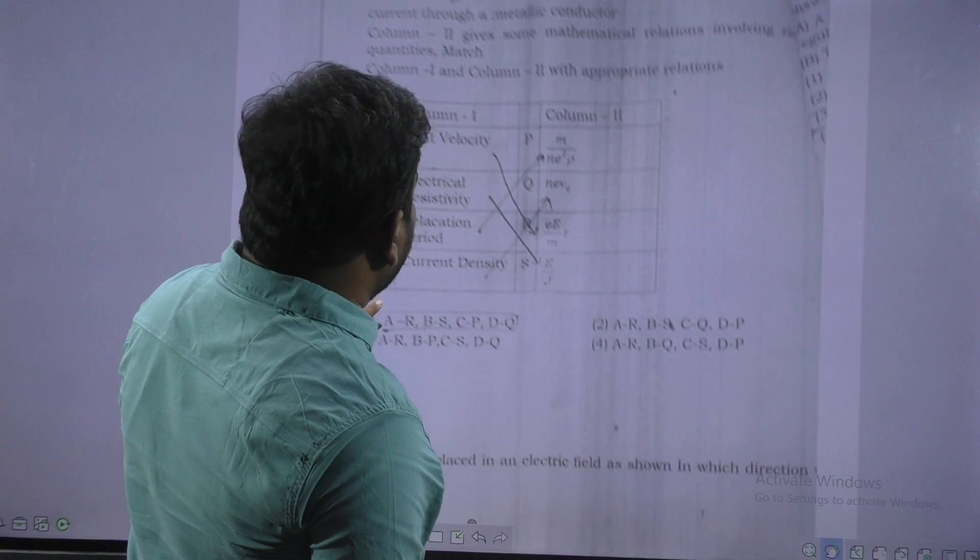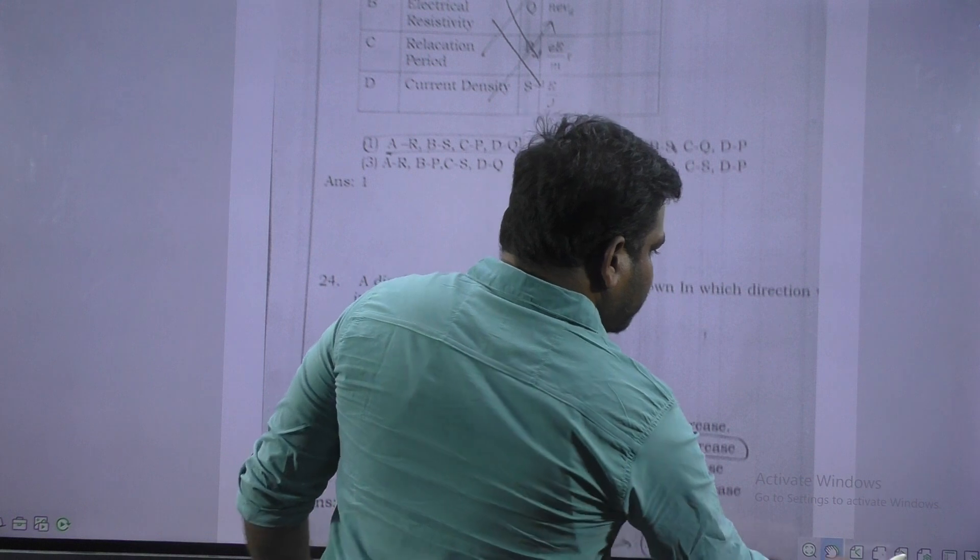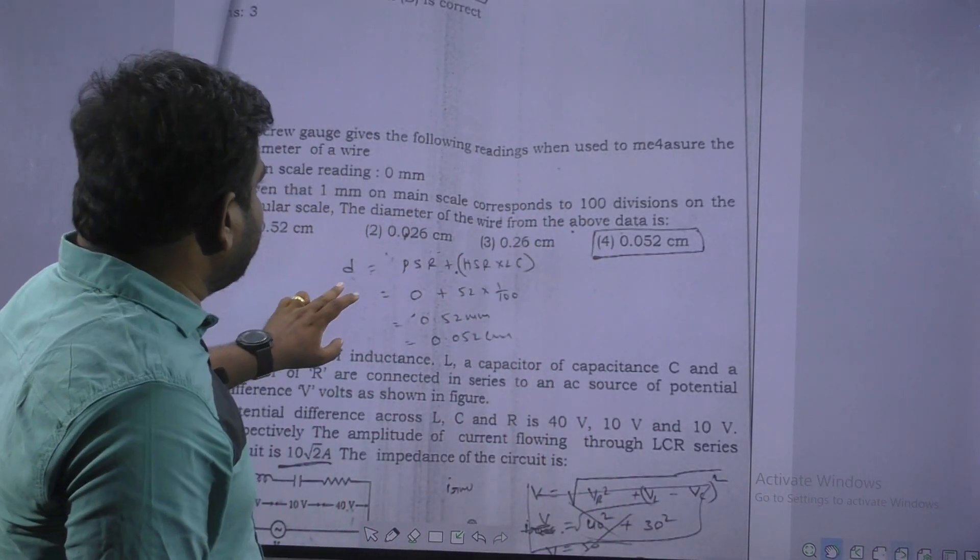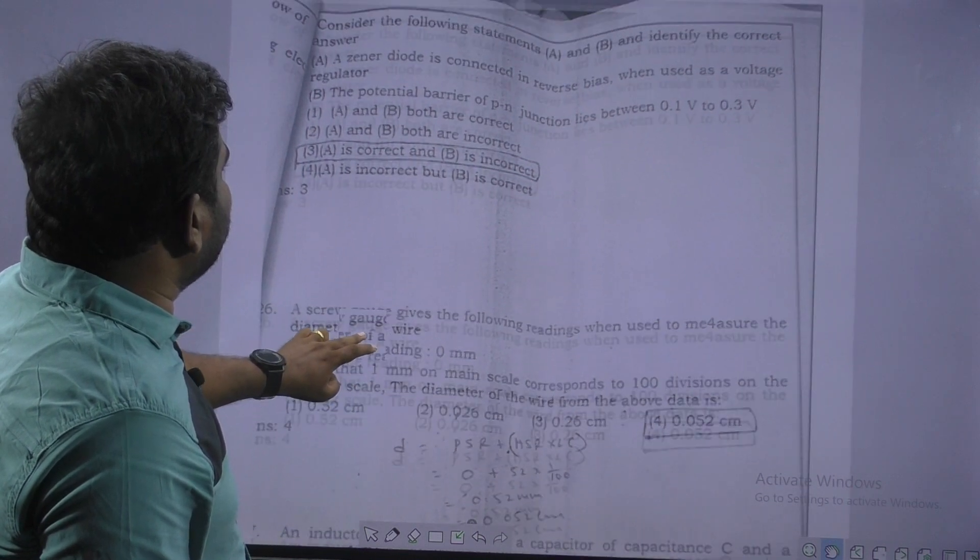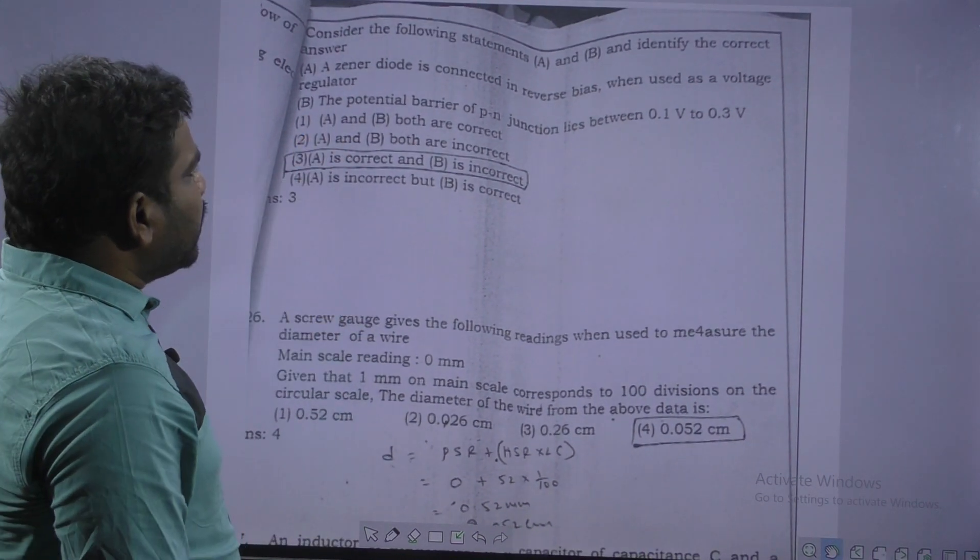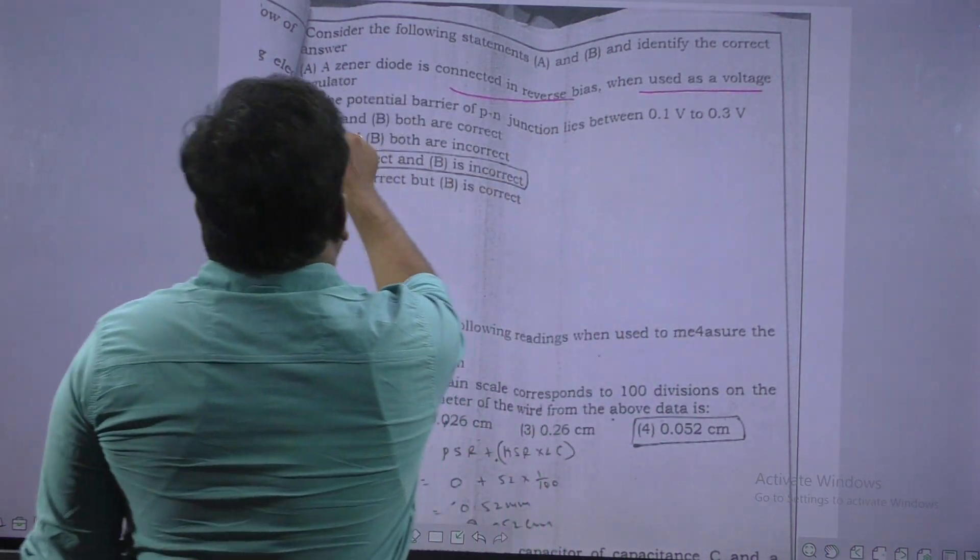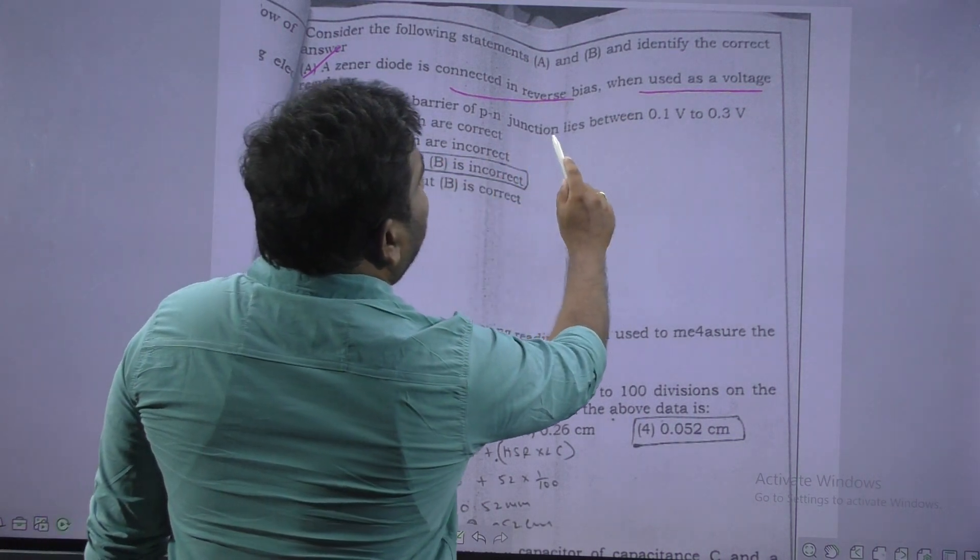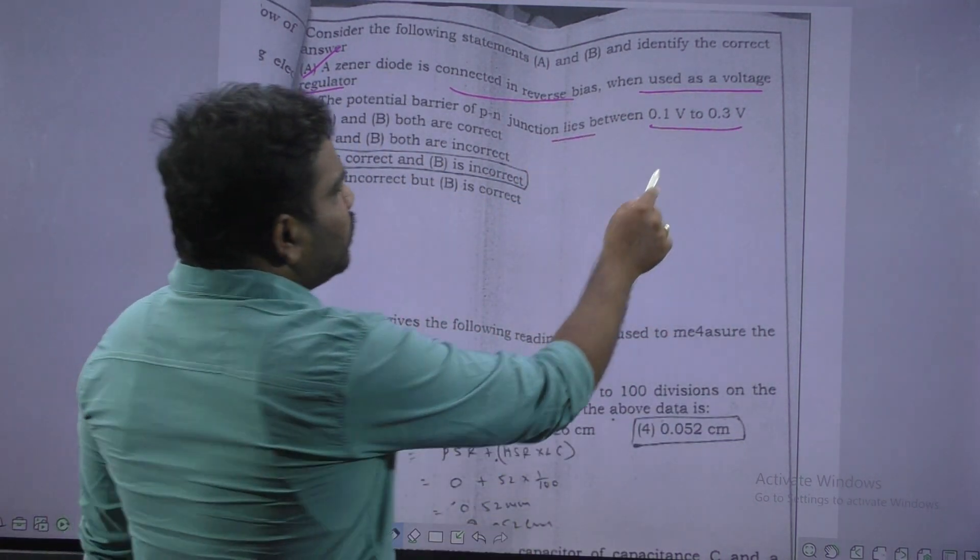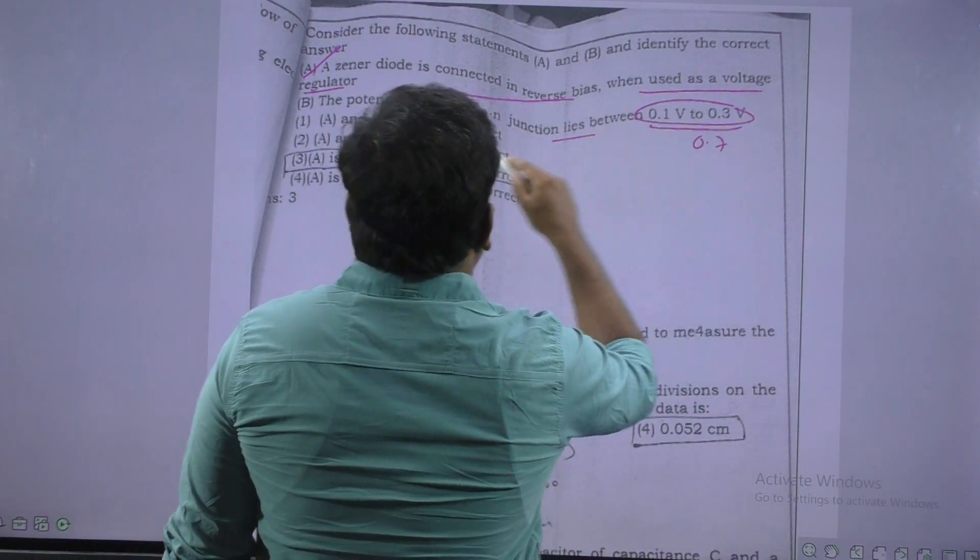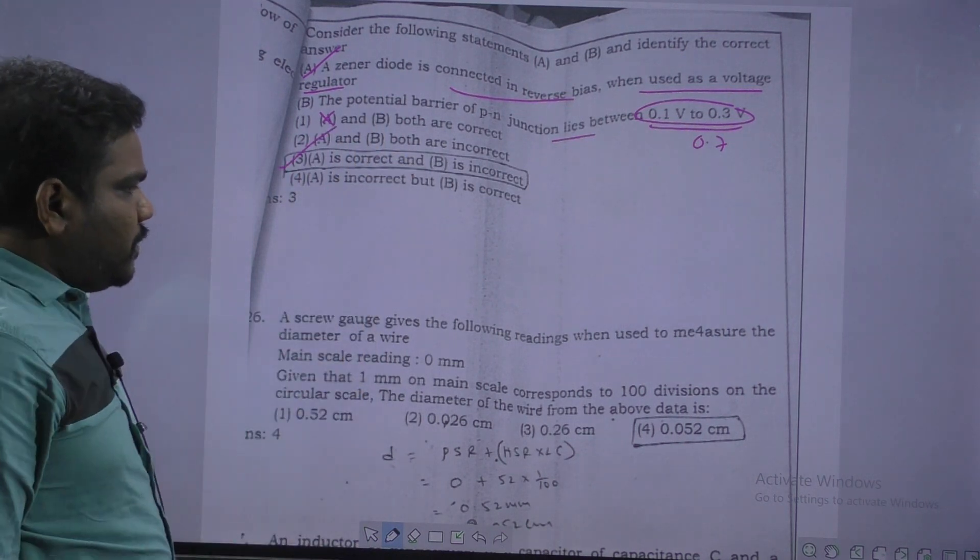Next. This will be explained later, not visible properly. Next. This is Zener diode connected in reverse bias. The potential barrier of the p-n junction is 0.3 volts, so up to it is 0.7 volts, that's why the statement is wrong. A is correct, B is incorrect, option 3.